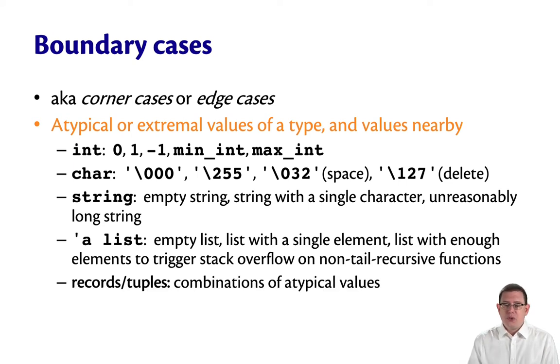For records and tuples, you could look at combinations of atypical values, and for variants, you could look at all of the constructors of it to see if there's one that would qualify as a boundary.